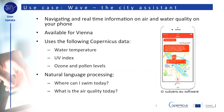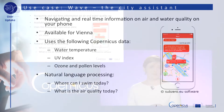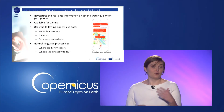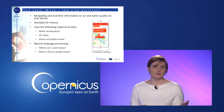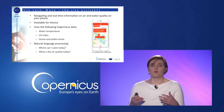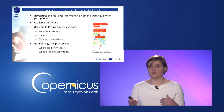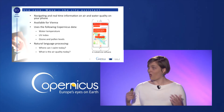We'll look a bit more into WAVE, the city assistant. WAVE is an iOS app for Vienna which gives you transport information and, with the use of Copernicus data, shows you if there are a lot of pollen in the air today or where the water temperature is nice enough to go swimming — all within the same app.